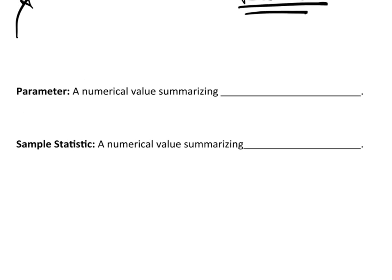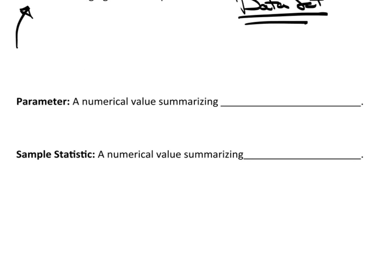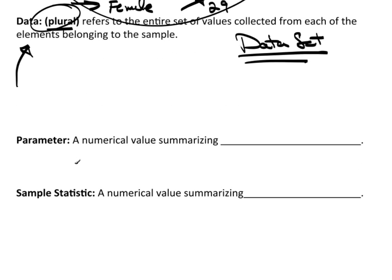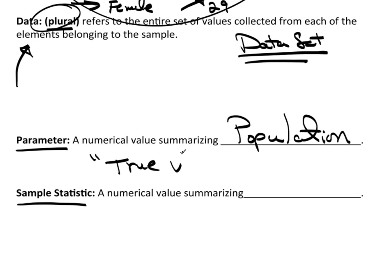Now, there's two incredibly important concepts here. The first being the parameter. There we go, the parameter. And the second being the sample statistic. Now, the parameter is a numerical value that summarizes the population. We think of the parameter as being the true value.